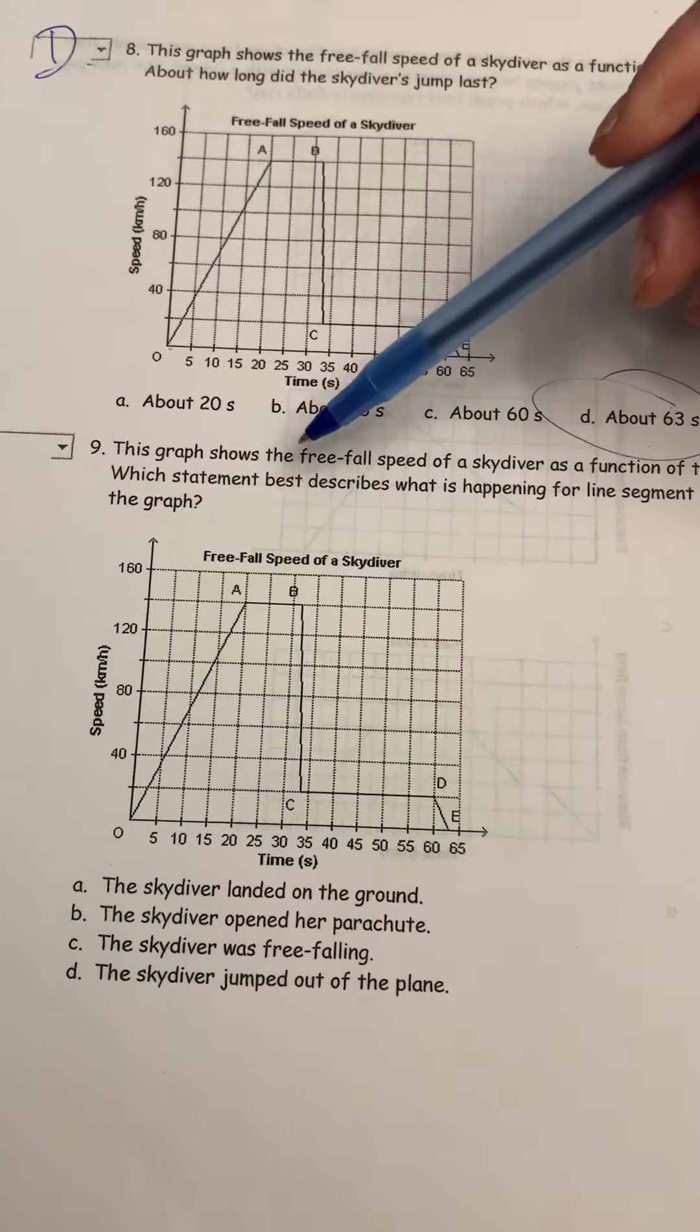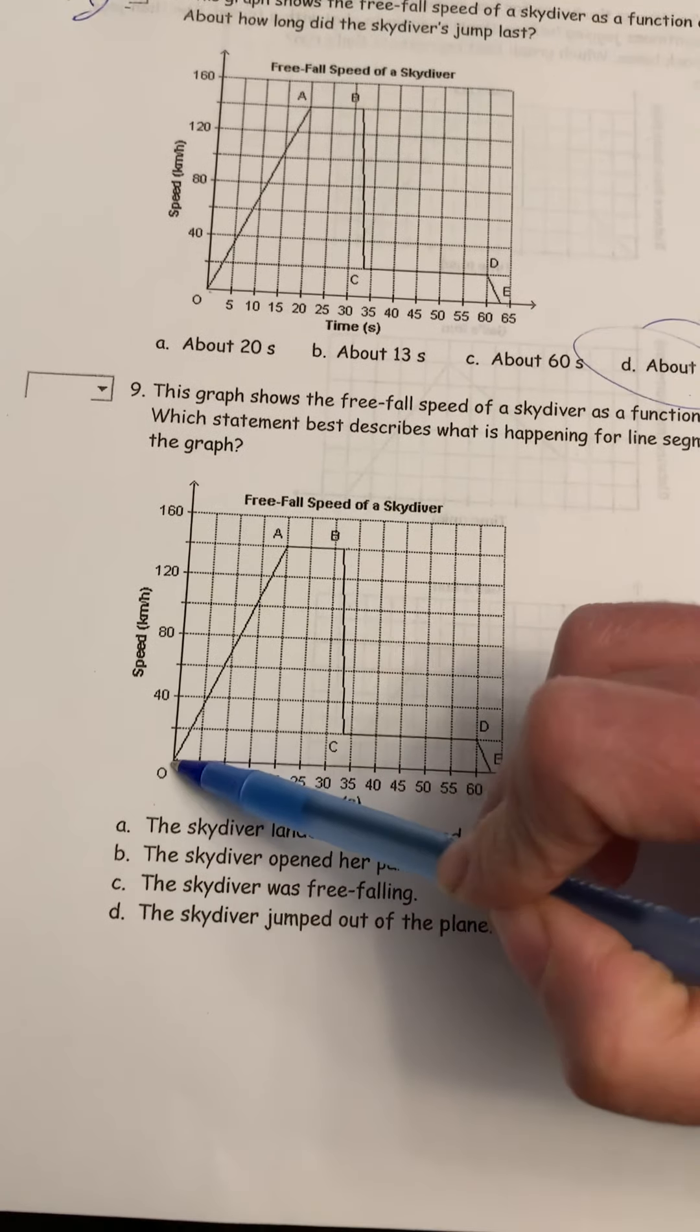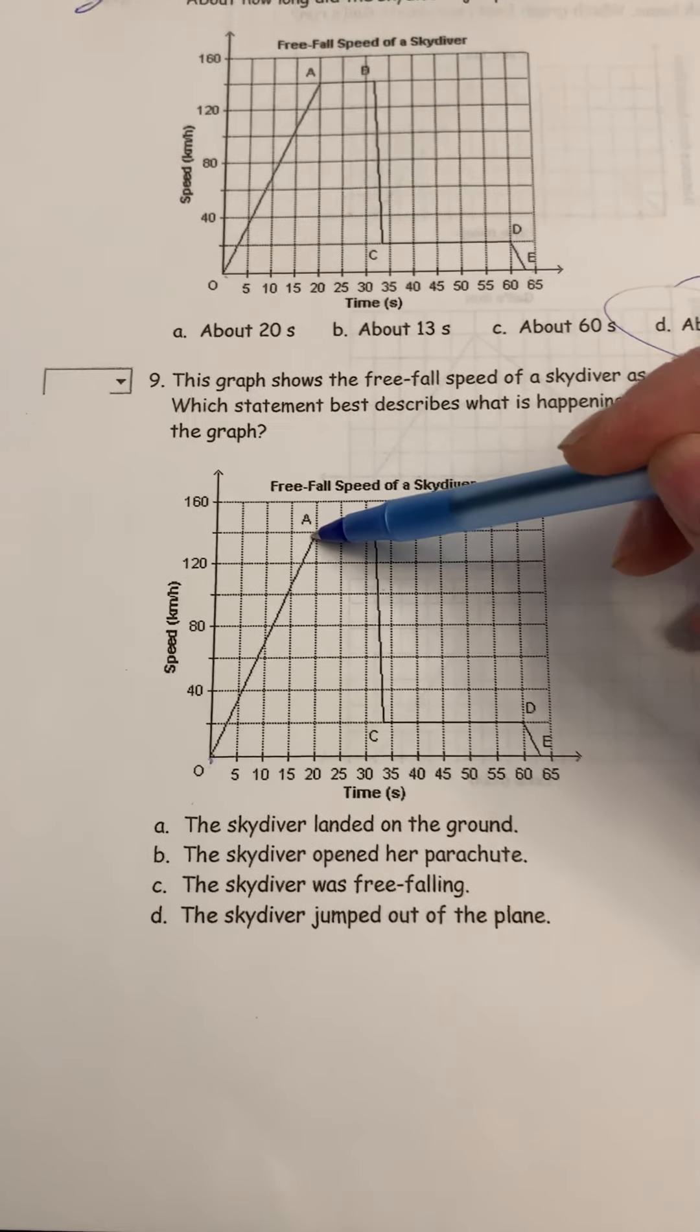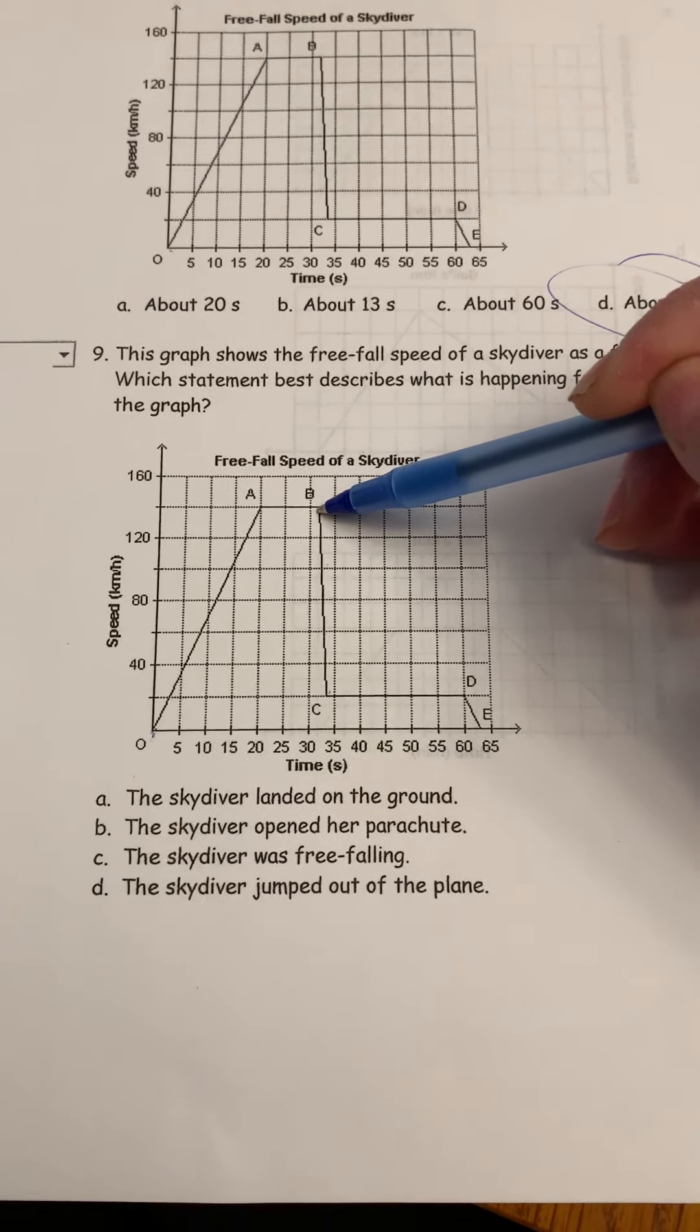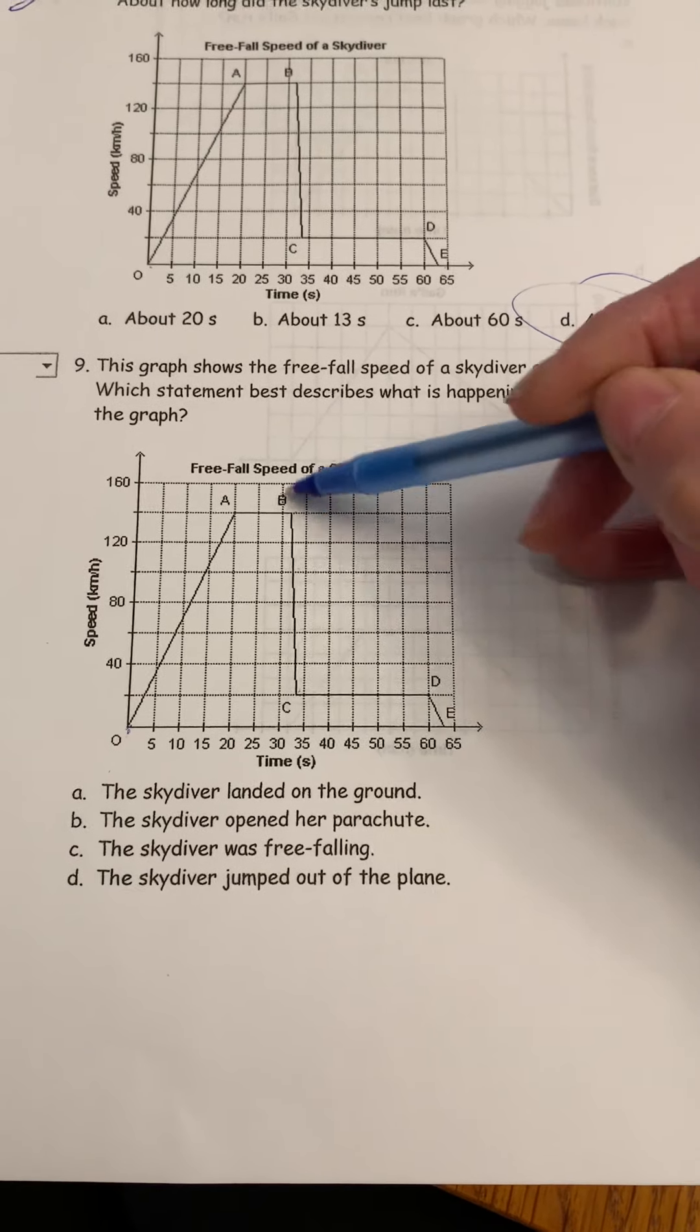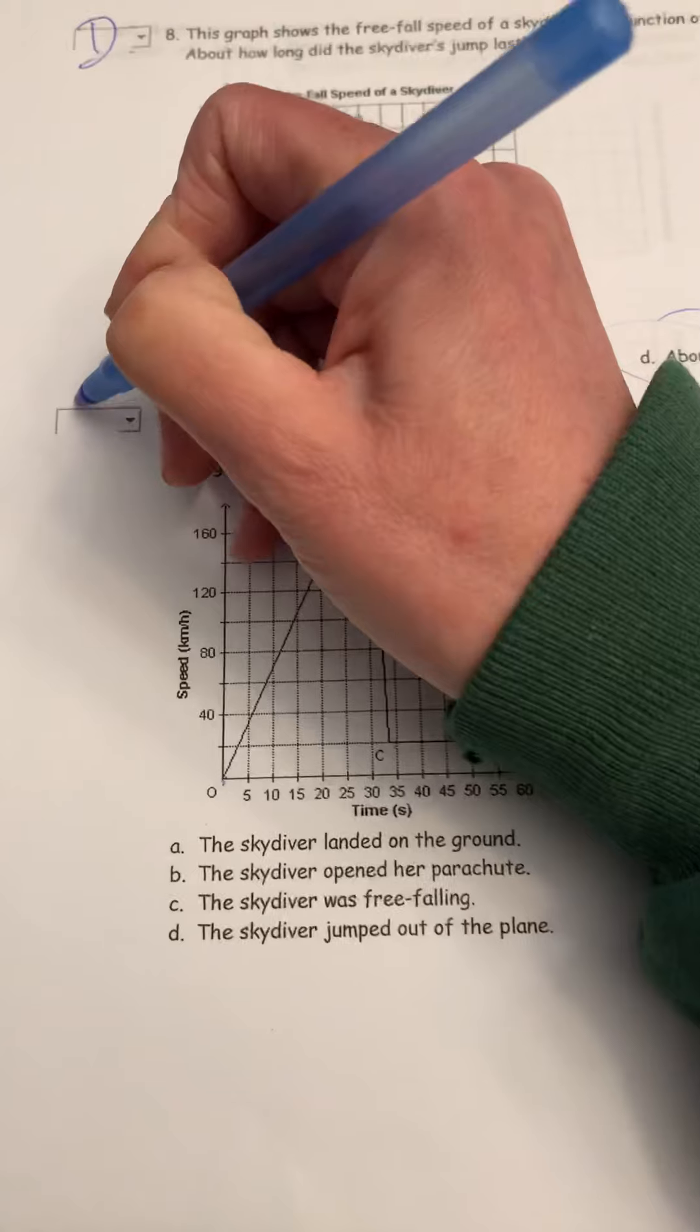This graph shows the free fall speed of a skydiver. Which statement best describes what's happening in line BC? Now this is interesting here because some people say that they landed on the ground, but that is not true. So you have to think about this. This is the point right here where they leave the airplane, and they build up a tremendous amount of speed. When you first fall out of that airplane, you are falling quickly. And then you reach the maximum speed that you're going to fall at. And then BC, you can see you're at about 140 kilometers per hour, and you slow down to around 20 kilometers per hour. So what happened there is you pulled the chute, you opened up your parachute. And when you open up your parachute, if you've ever seen that on television, I'd be too scared to actually try this myself, but you slow down very, very quickly. So that's what happened there is they opened up their parachute, and therefore their speed decreased greatly.